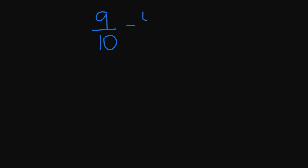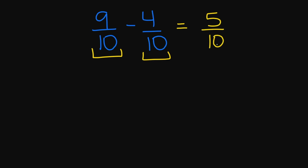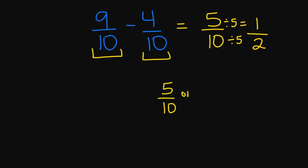Let's try 9 over 10 minus 4 over 10. My denominators are the same, so I'm going to subtract my numerators. 9 minus 4 is going to equal 5, over 10. I can simplify this because 5 goes into both 5 and 10. So 5 divided by 5 equals 1, and 10 divided by 5 equals 2. So your answers are 5 over 10 or 1 over 2.